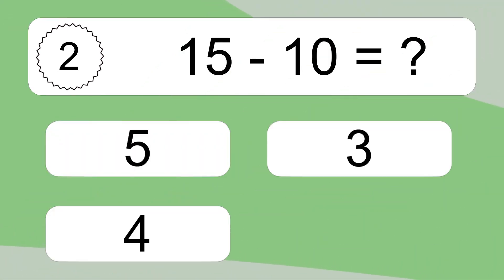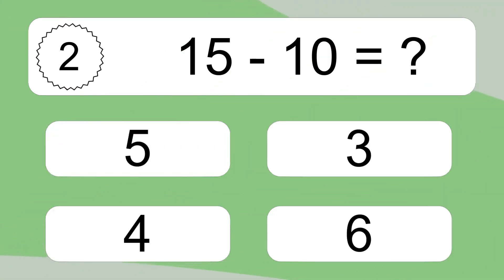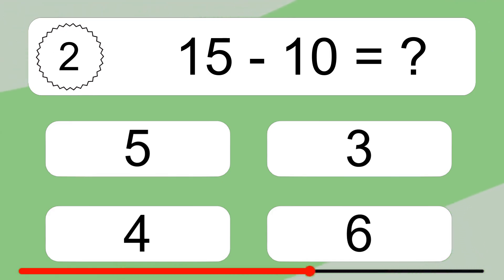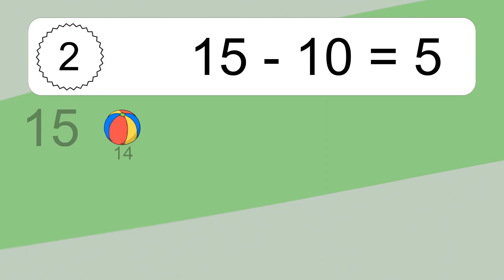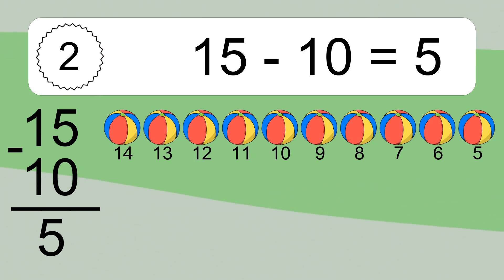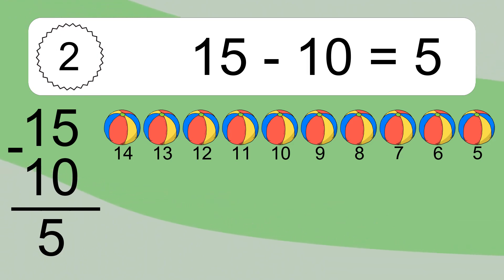15 minus 10 equals what? 15 minus 10 equals 5. Let's count it! 14, 13, 12, 11, 10, 9, 8, 7, 6, 5.